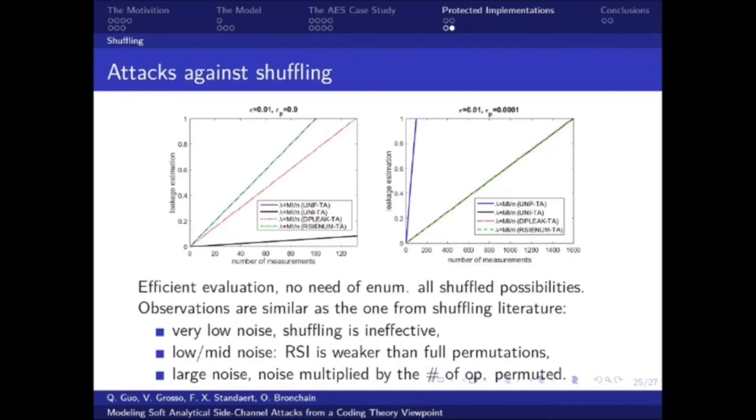For low noise, shuffling is ineffective and doesn't improve the security of your device. For low/mid noise, shuffling starts to have an impact on the information leakage, but as a random start index, it's quite easy to do the enumeration, then we have weaker security. And finally, for large noise, all shuffling operations have a similar impact, and typically, we multiply the noise by the number of operations. It's what we can see here. For unprotected cases, we need to have full information, which is 100 traces, while for shuffling, then we need 1600.